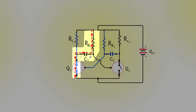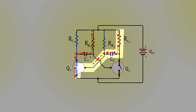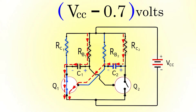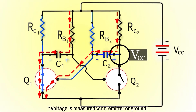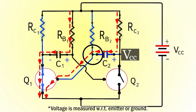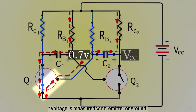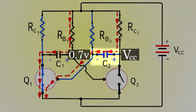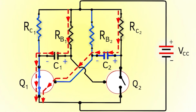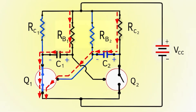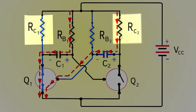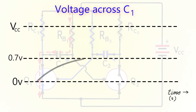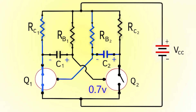While C1 is charging in this path, C2 also gets charged through a different path. Capacitor C2 will charge up to the supplied voltage VCC minus 0.7V. That's because one terminal of C2 is connected to VCC since Q2 is open, and the other terminal is connected to the base of Q1, which is at 0.7V since Q1 is closed. That's why C2 charges up to VCC minus 0.7V. C2 charges much faster than C1 because the base resistors have much higher resistance compared to the collector resistors. As C1 charges from 0V and reaches 0.7V — enough to activate a transistor — Q2 turns on.